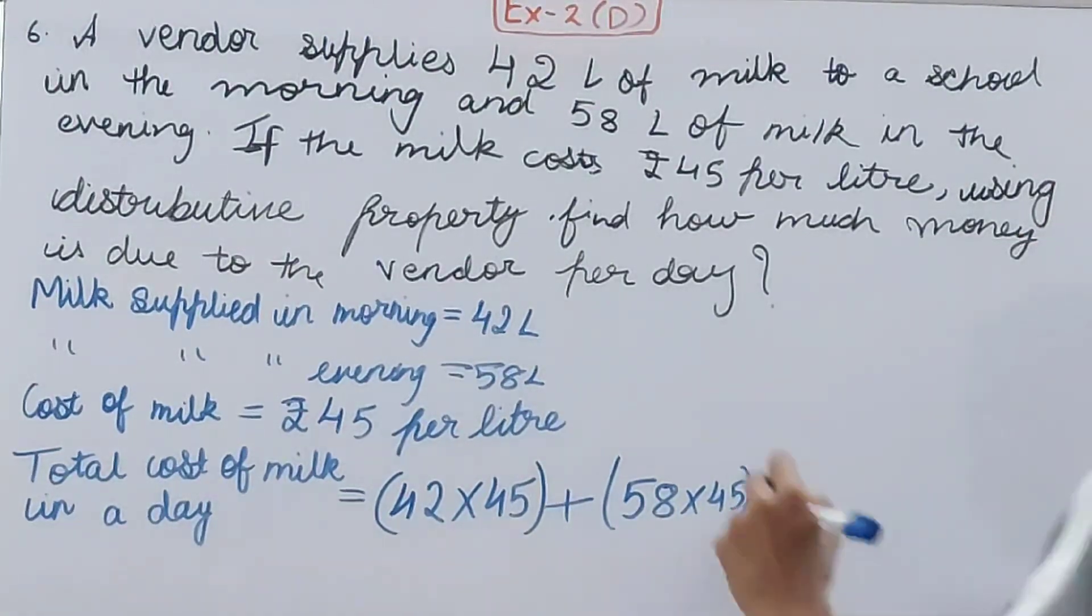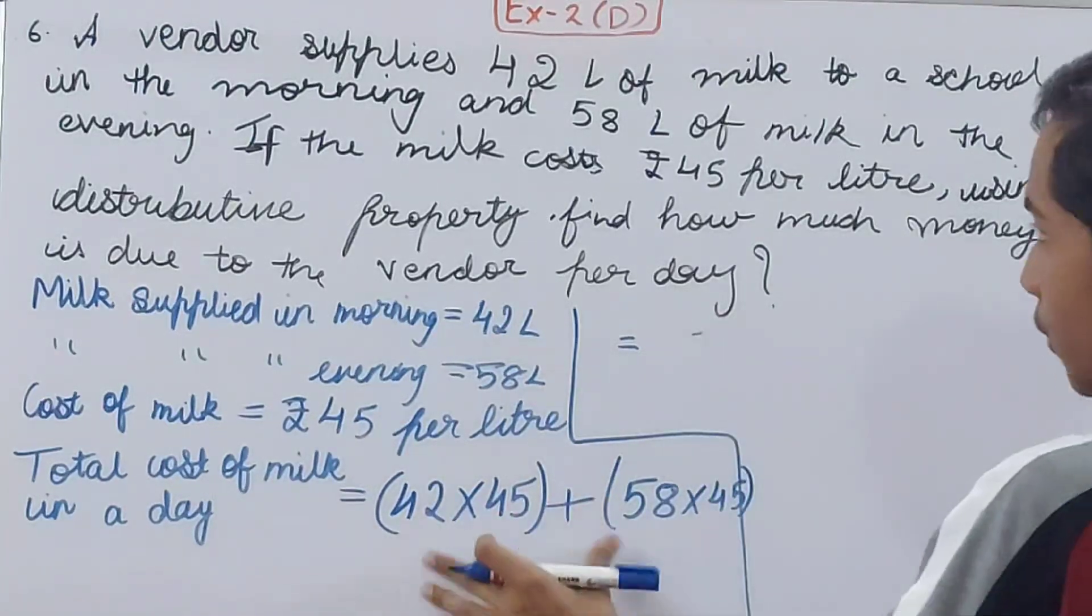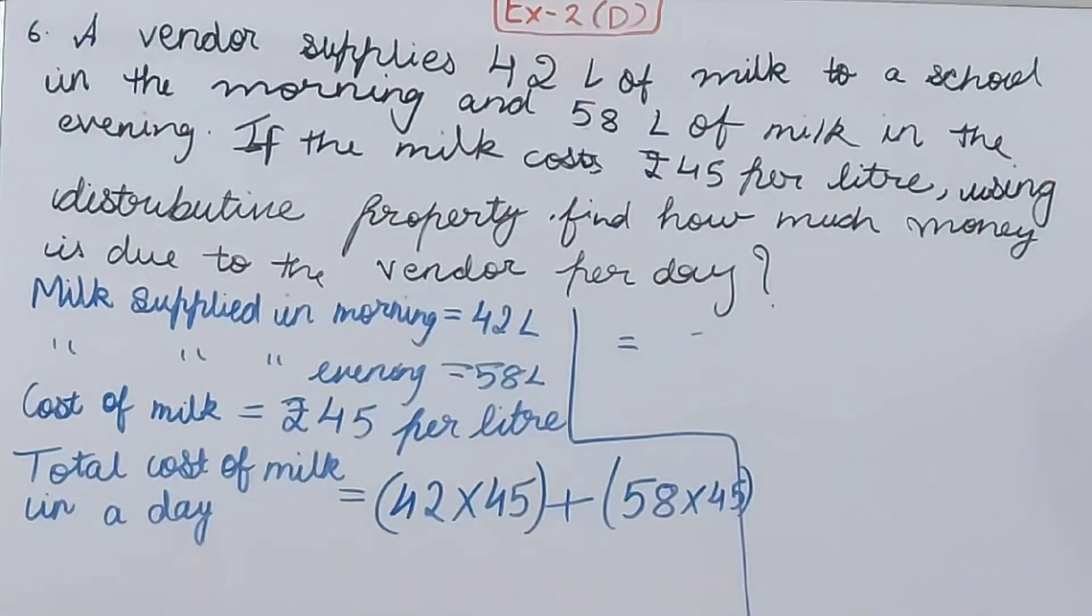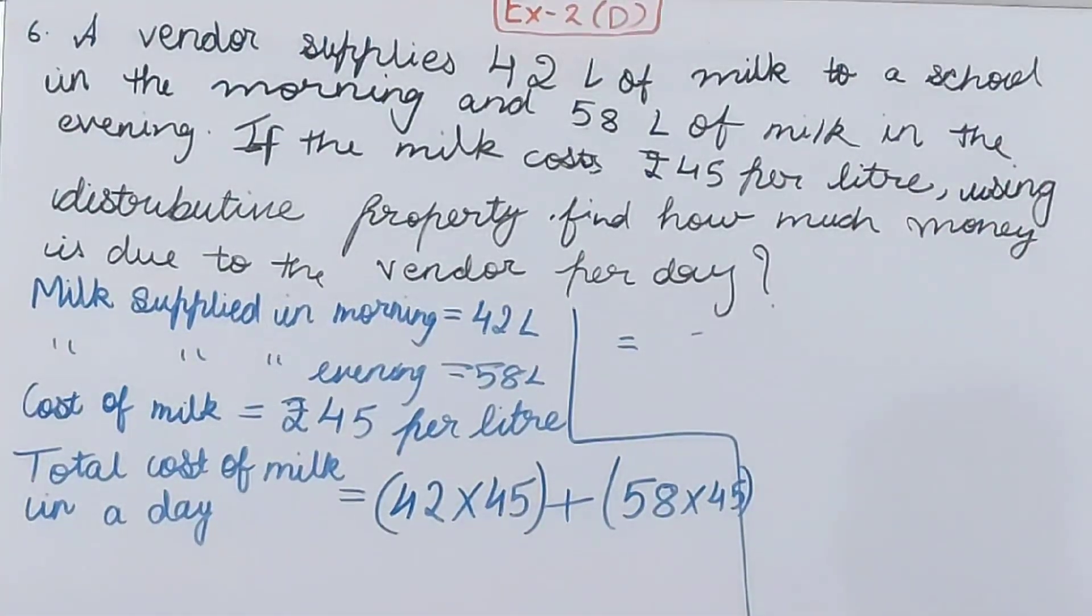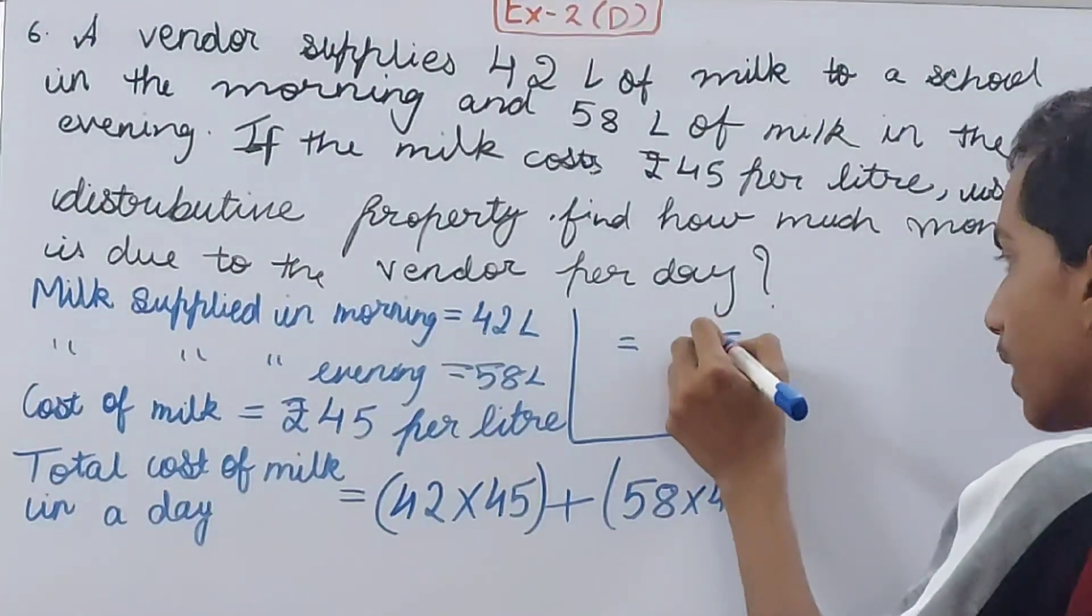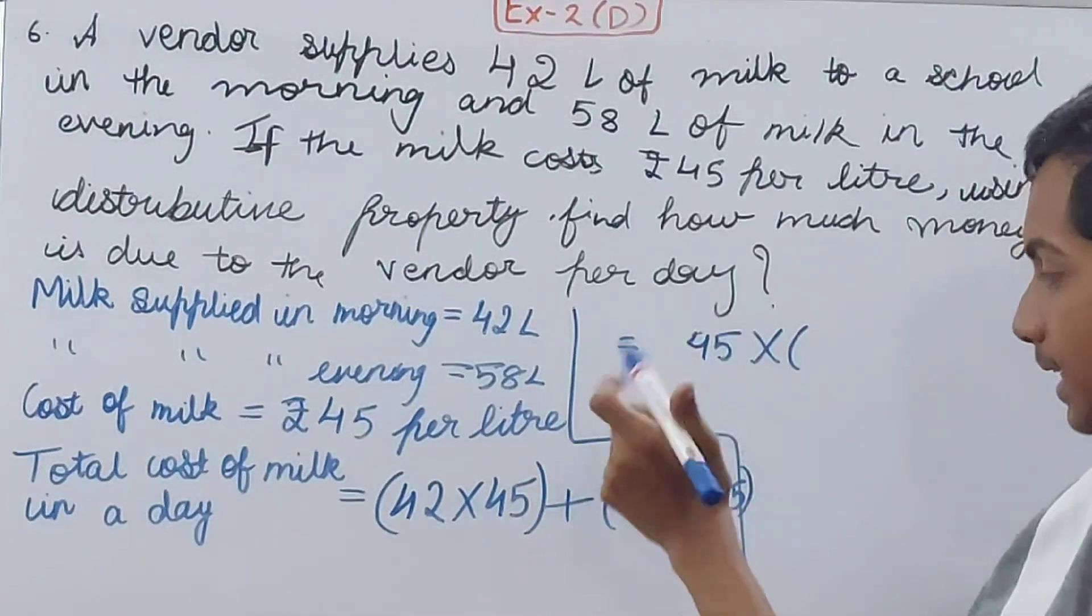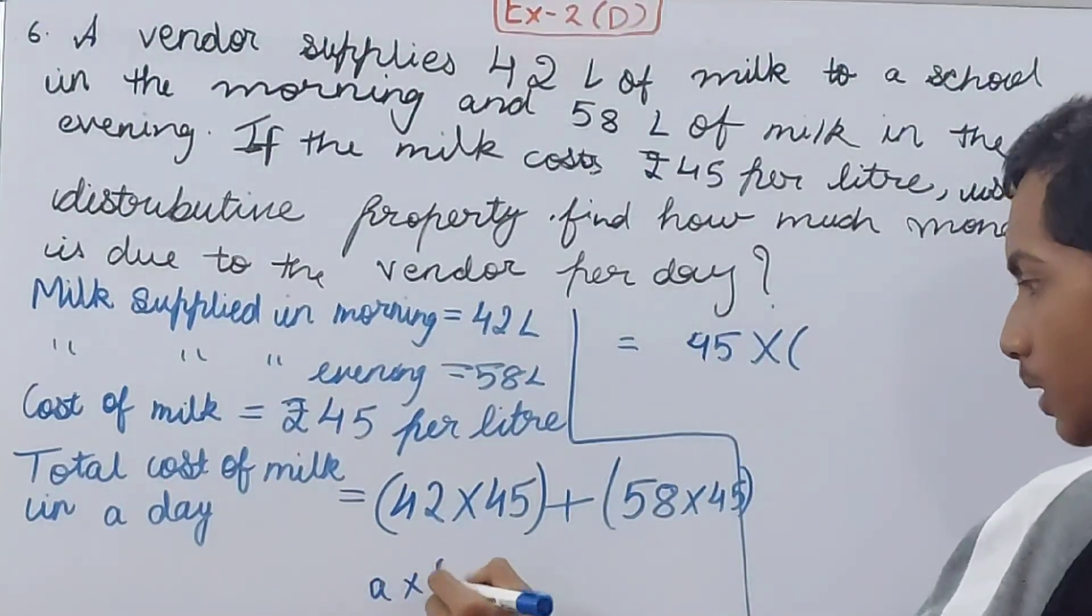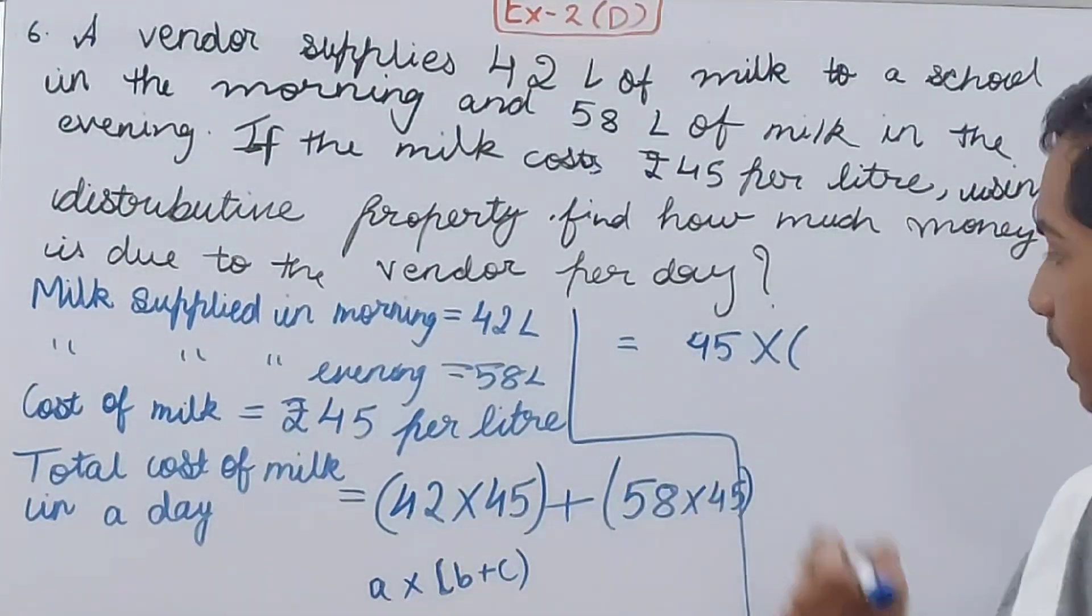Let us solve this and see what we get as the answer. You have to use the distributive property as it says here. We'll use distributive property of multiplication over addition. 45 and 45 is common in both, so I will take 45 outside into a times b plus c. So a is 45, and b plus c - 42 and 58 remain, so 42 plus 58.